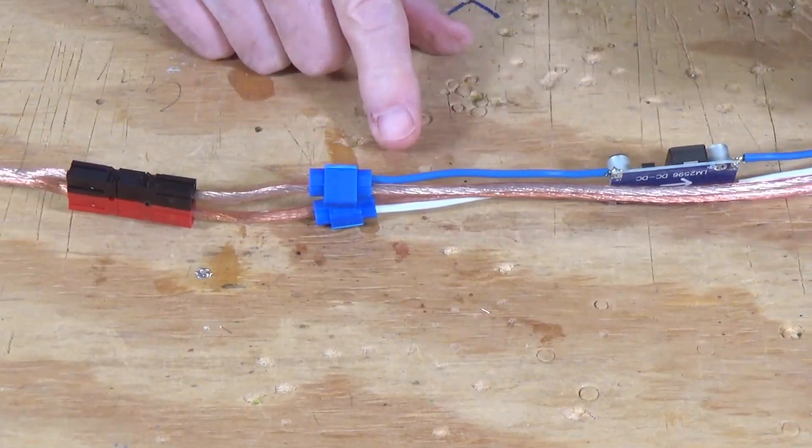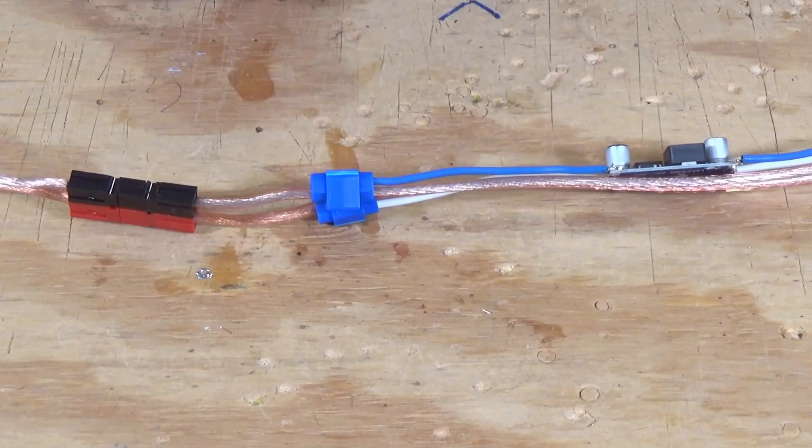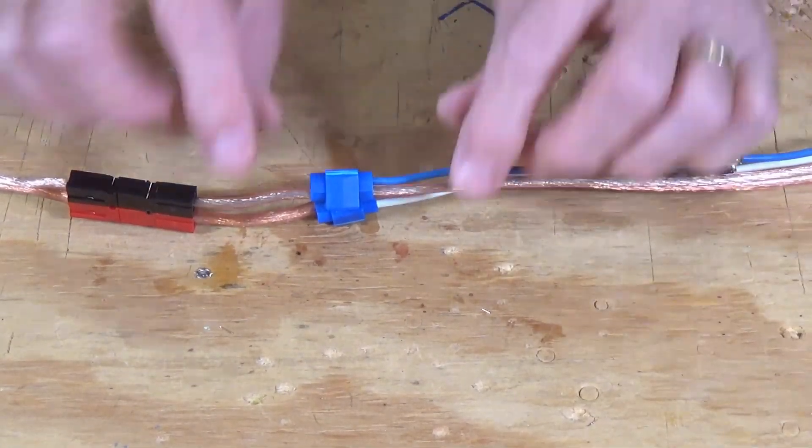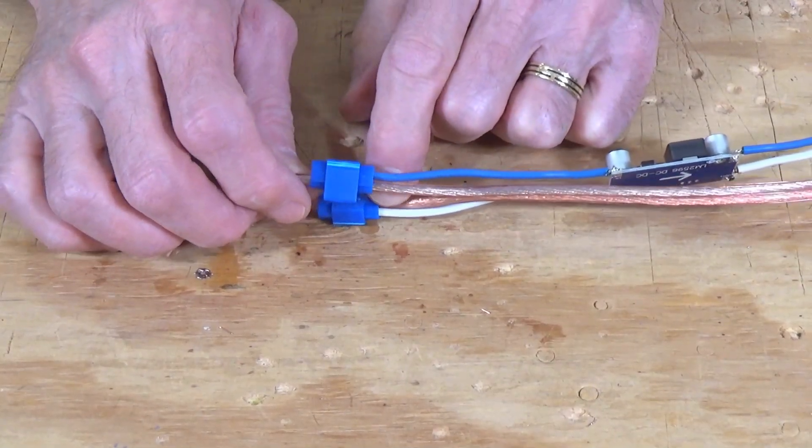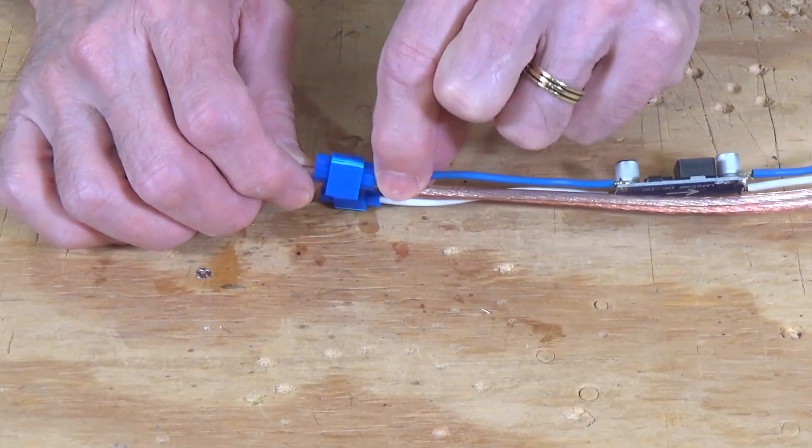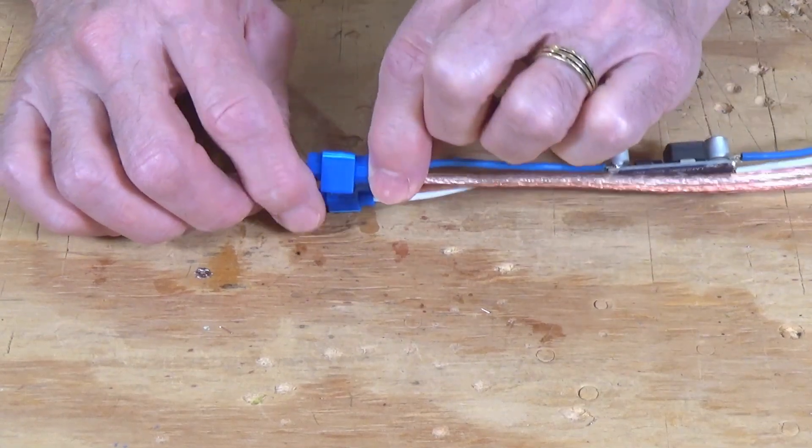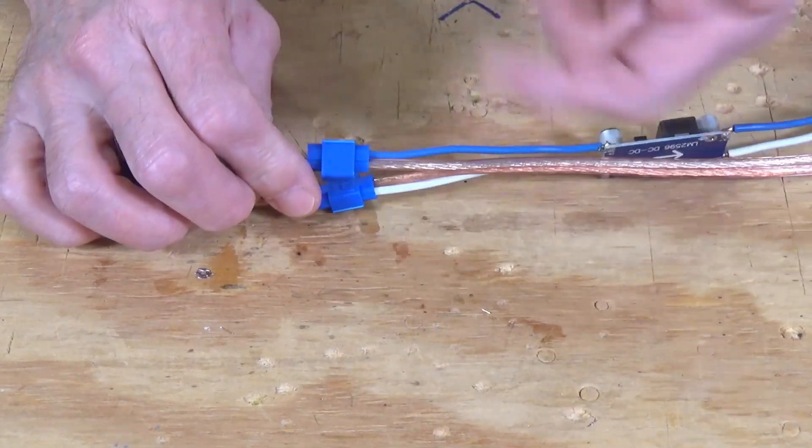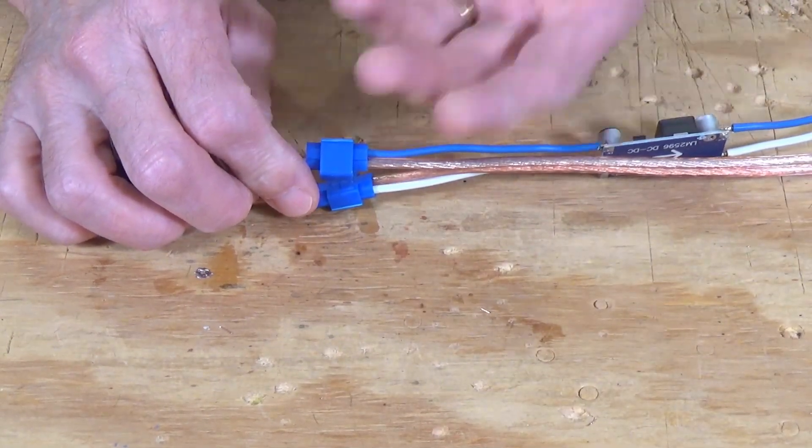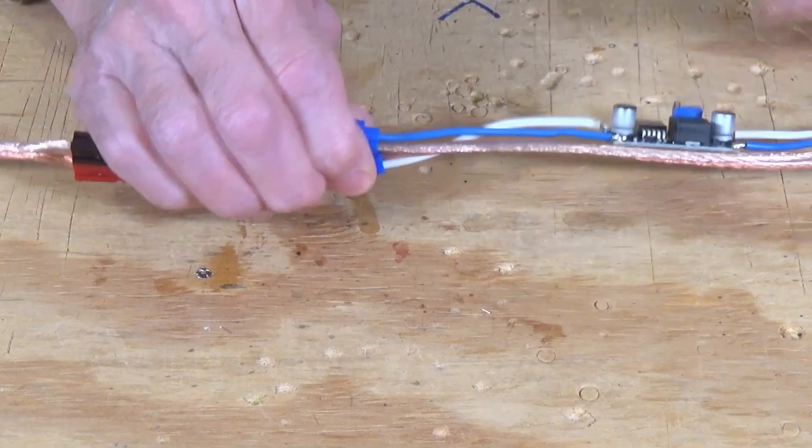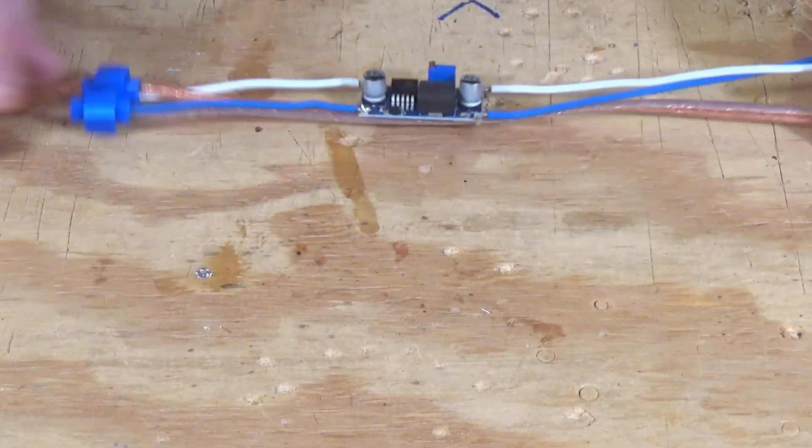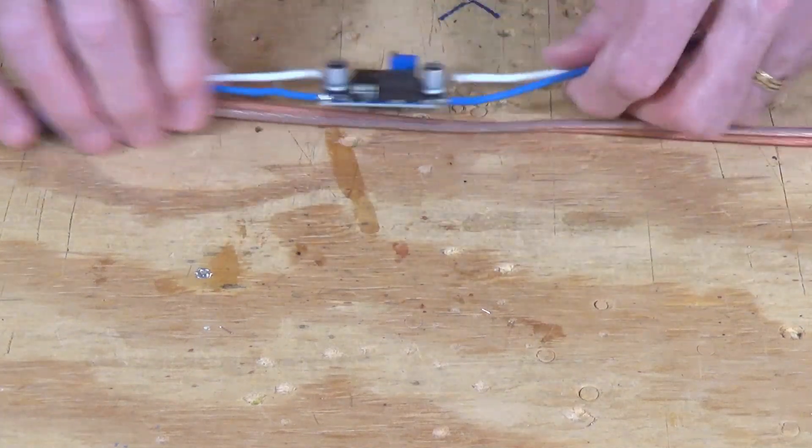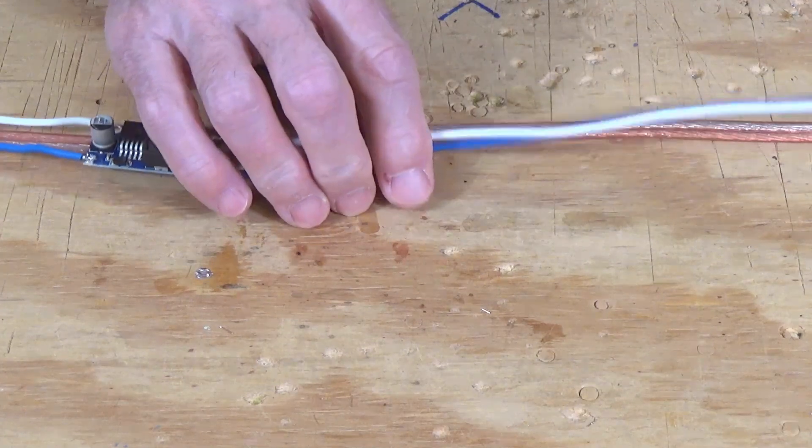These are slightly different from the 3M suitcase connectors I've shown you before. This particular color here, the blue ones, are specifically for 14 to 18 gauge wires. And that's both wires. They are not a step-down type connector. So this is great for connecting two wires that are in the range of 14, 16, or 18 gauges. So we've got that connection made now. So we now have a bus that will be the 16 gauge bus, and we have another bus here that will be the 12 gauge bus.